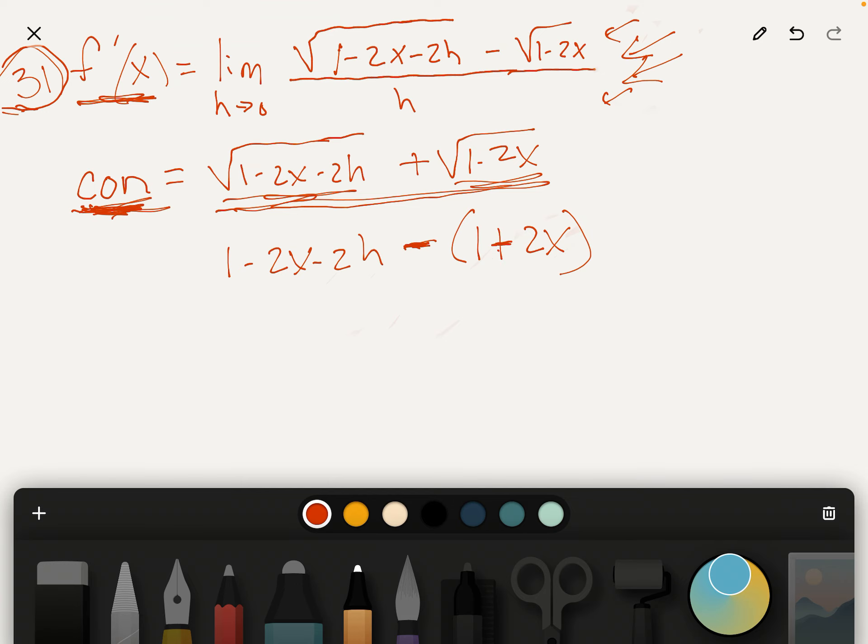So if we get rid of the parentheses, the numerator now looks like this. And the denominator is h times the conjugate.